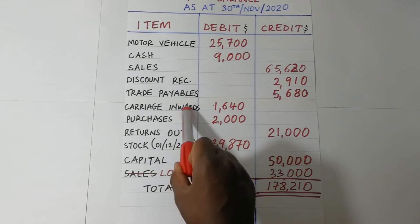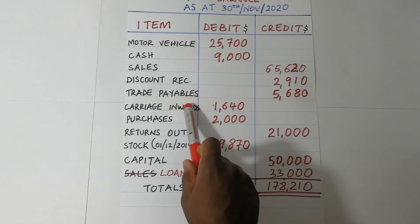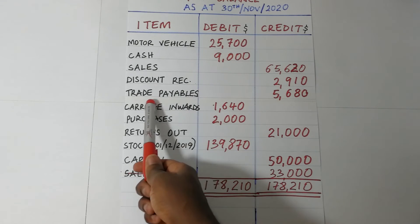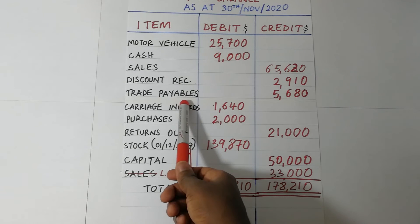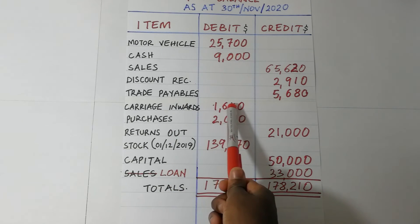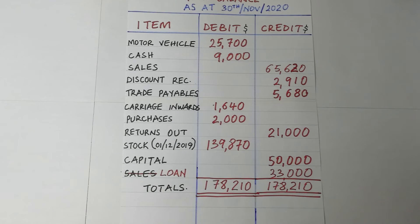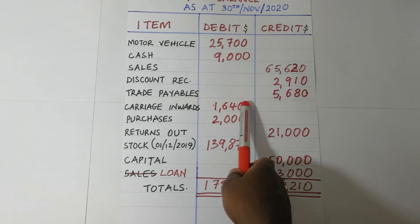Let's look at carriage inwards — transport on purchases or goods coming into the business. This is considered a direct cost of production and is debited. Carriage outwards is also an expense: it is the transport incurred by the business to ensure goods reach the customers, and it is also considered a debit balance.